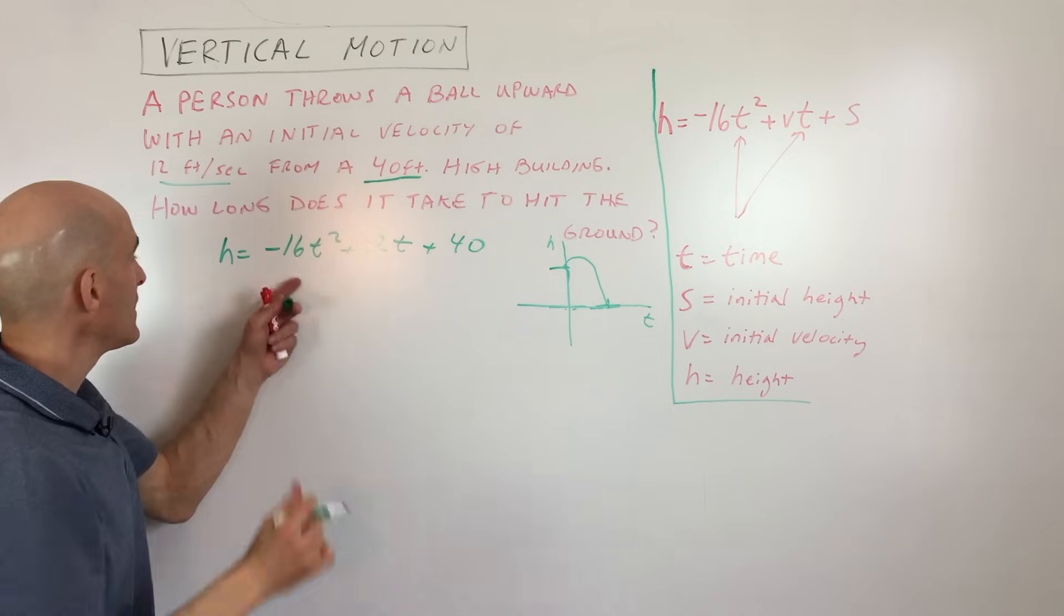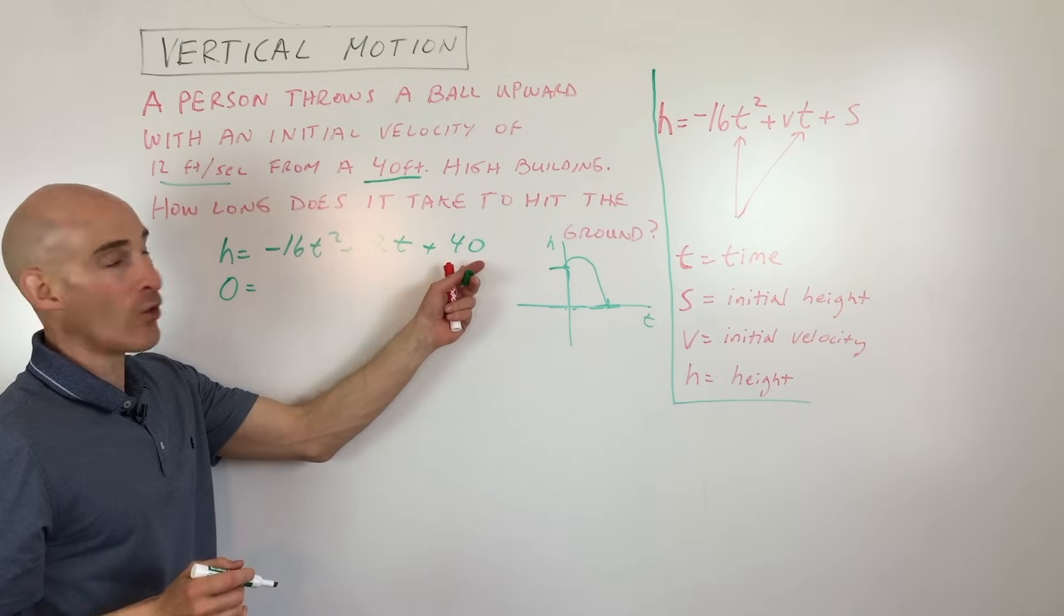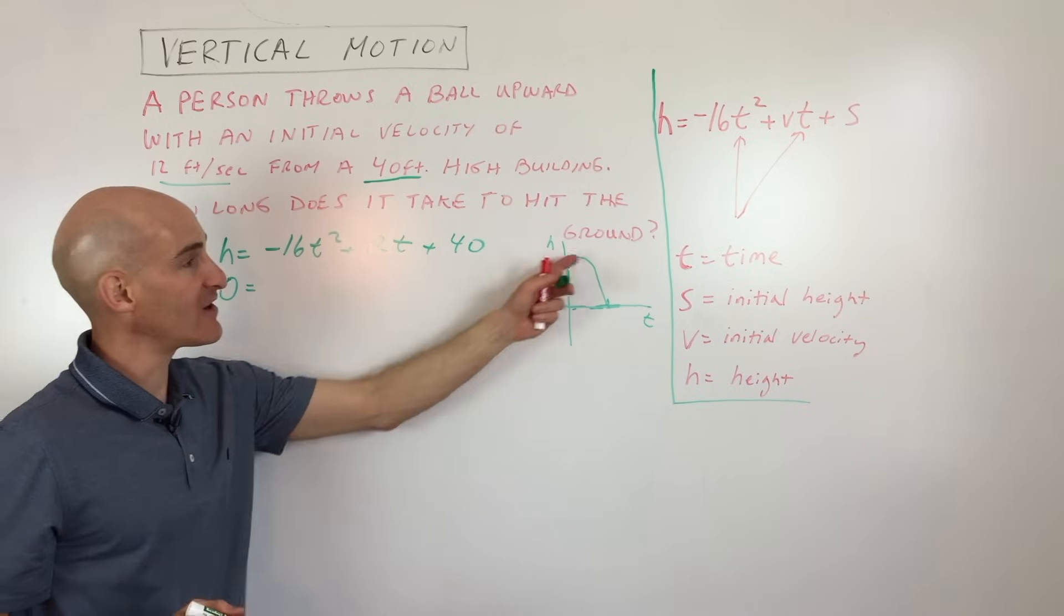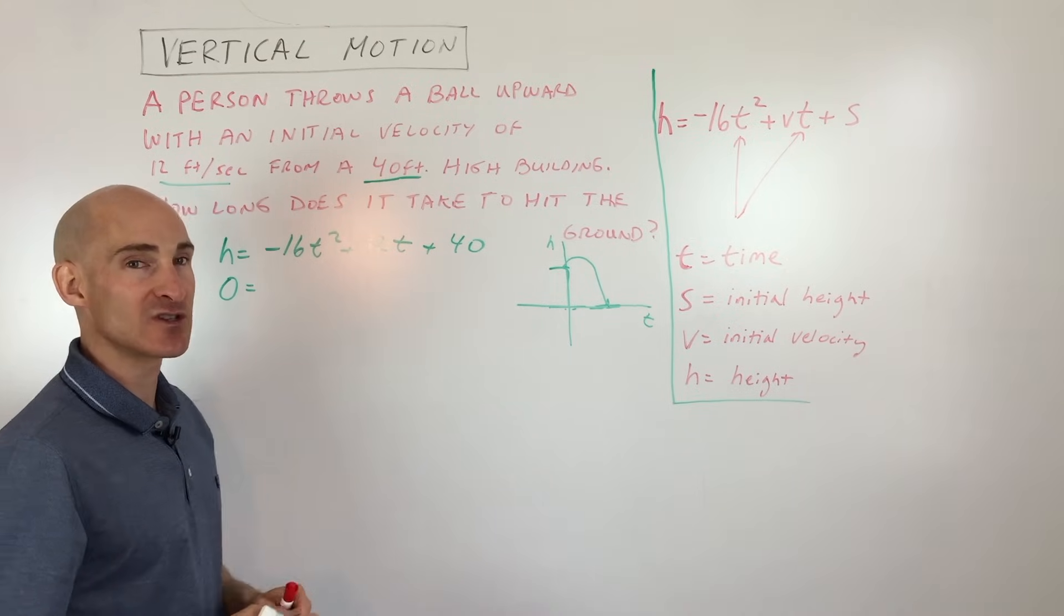That's where it hits the ground. So let's go ahead and set h equal to zero. And what we can do is we can factor this or we could use the quadratic formula or we could complete the square or we could graph it on our calculators. We have a lot of different options, but let's see if we can do it factoring this particular one.